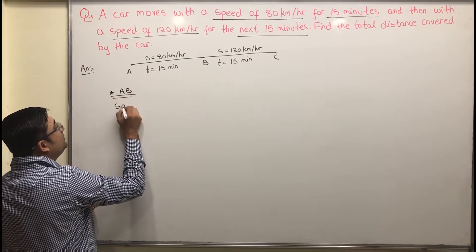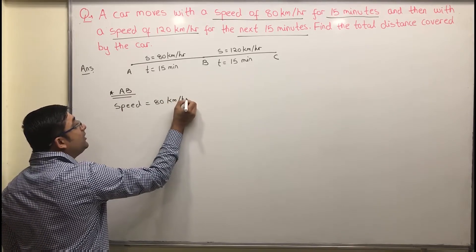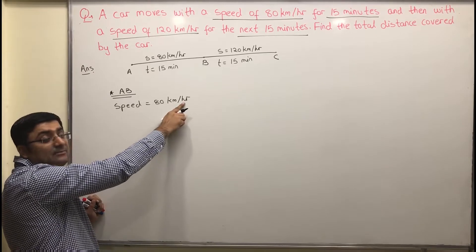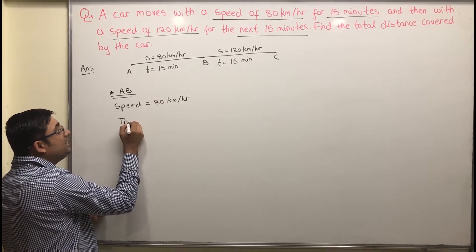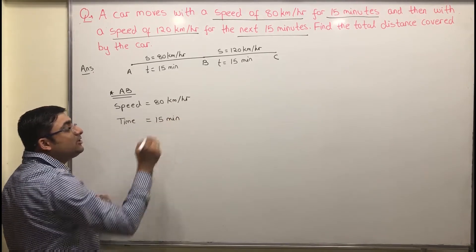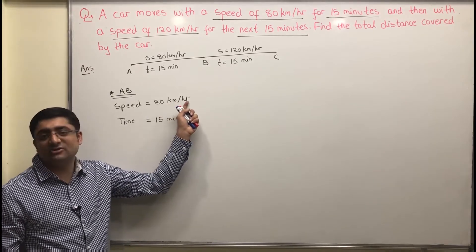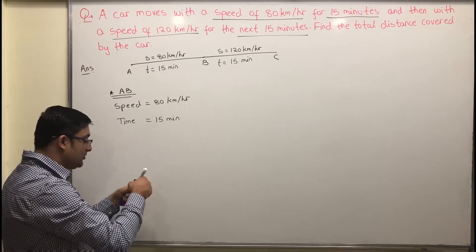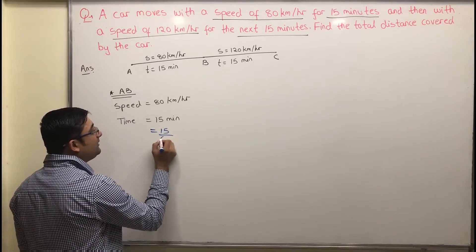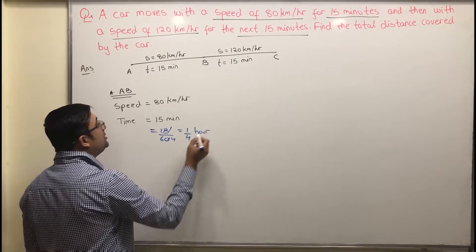For AB, speed is given as 80 kilometers per hour. Because speed is in kilometers per hour, distance has to be in kilometers and time has to be in hours. But time is given in minutes, so we have to convert to hours — divide by 60. So 15 divided by 60 gives us one-fourth of an hour.